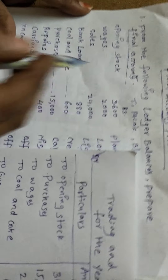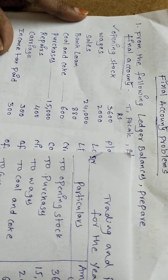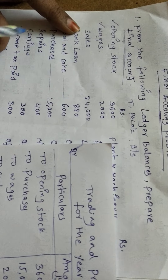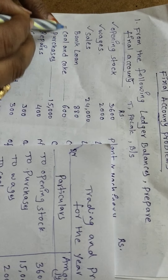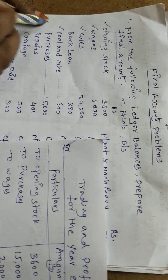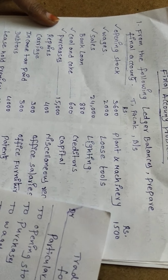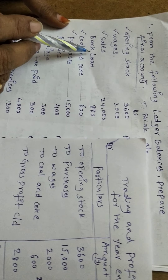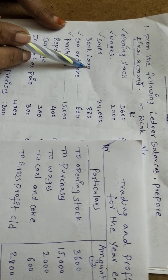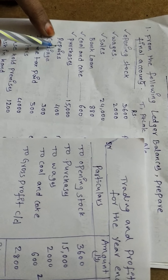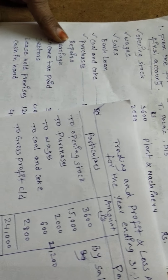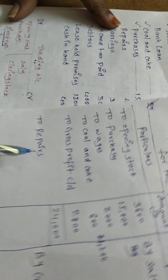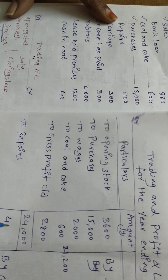Opening stock, wages, sales, coal and coke, and purchases are already recorded. Next is bank loan — it is a liability, shown in the balance sheet. Repairs is an indirect expense: 'To repairs' — amount 400.